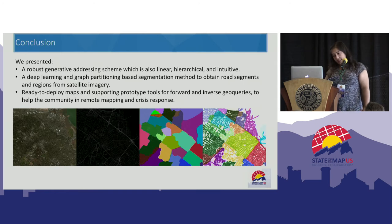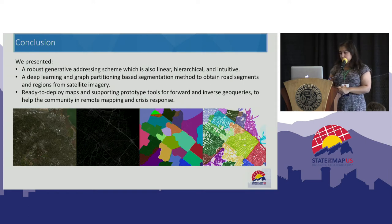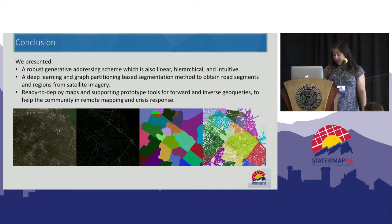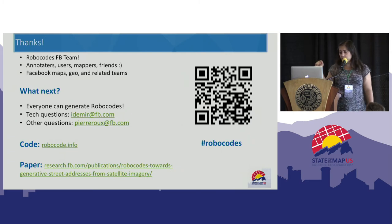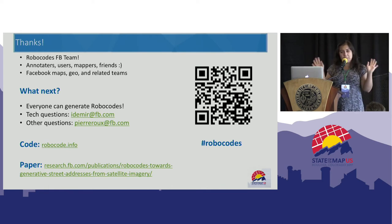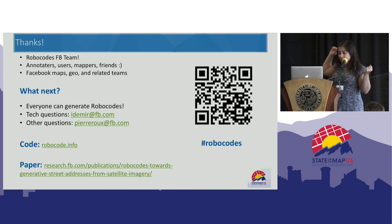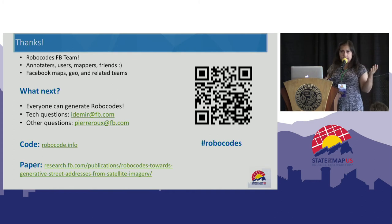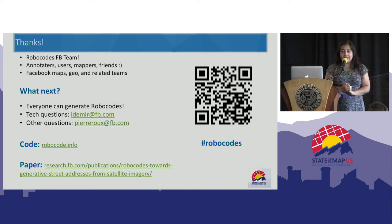We presented a robust generative addressing scheme. We showed how to extract it using deep learning and graph partitioning, and how Robocodes can be used for immediate mapping and crisis response. Thank you to the Robocodes team, annotators, users, mappers, the Facebook maps team, geo team, and everyone supporting the project. You can generate Robocodes now — the code is open source on GitHub, available at robocode.info, and the paper covers all the technical details.